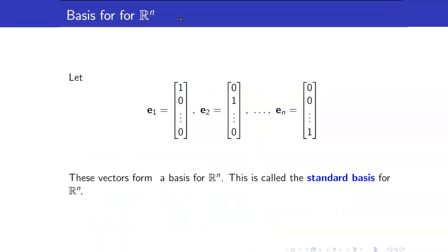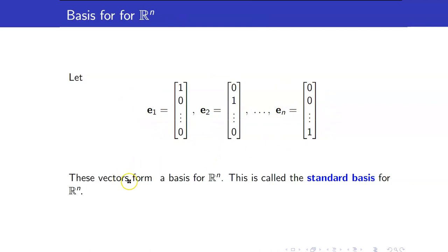Hence, this really forms a basis for R3, and we call this the standard basis for R3. We can generalize what we have seen for R3 for any vector space Rn. We've already seen this set: e1, e2, up to eN. These vectors form a basis for Rn, and this is called the standard basis for Rn.